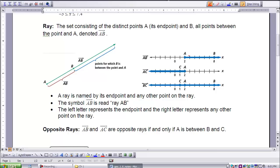We will name this ray by its endpoint A, and another point on it. The endpoint is always listed first, and then the point on the ray is listed second, and the arrow pointing to the right is put above it. So once again, I have some bulleted points here for you. A ray is named by its endpoint and any other point on the ray. The symbol here is read as ray AB. The left letter represents the endpoint, and the right letter represents any other point on the ray.